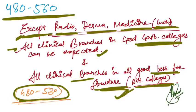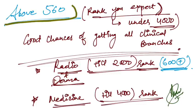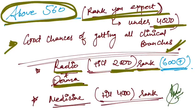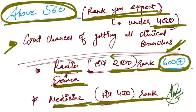Above 560, the rank you can expect is under 4000. Good chances of getting all clinical branches. Radio and derma seats you can get till under 2000 rank, and you need 600 plus score for this. At 4000 rank, till 4000 rank, you can get medicine in government colleges. If you are scoring around 560 to 570 or 580, you can get medicine in government medical colleges.